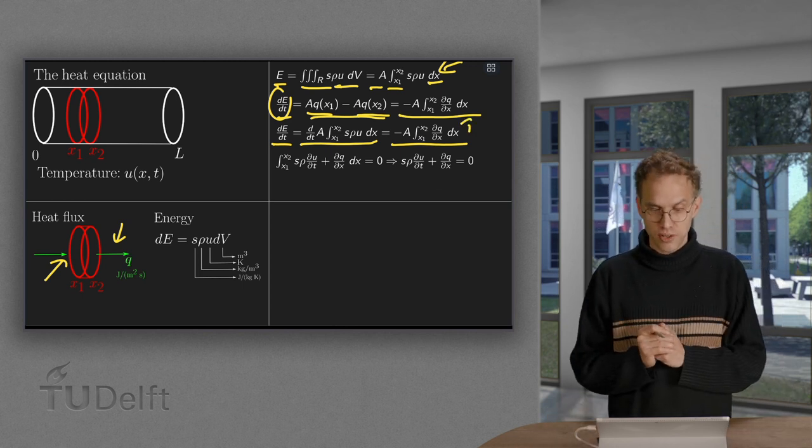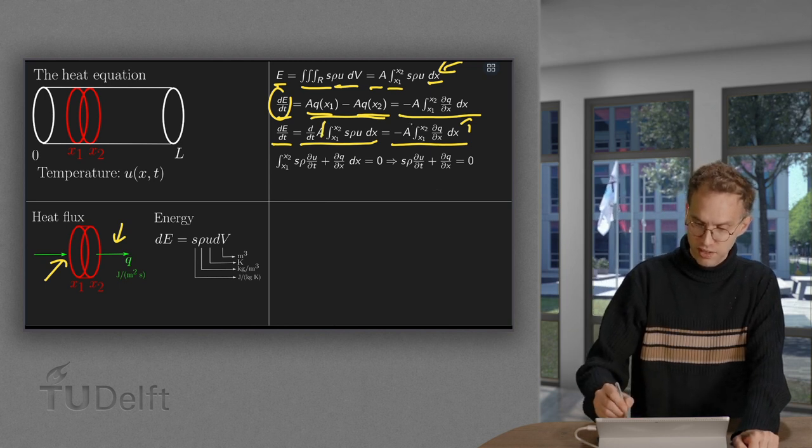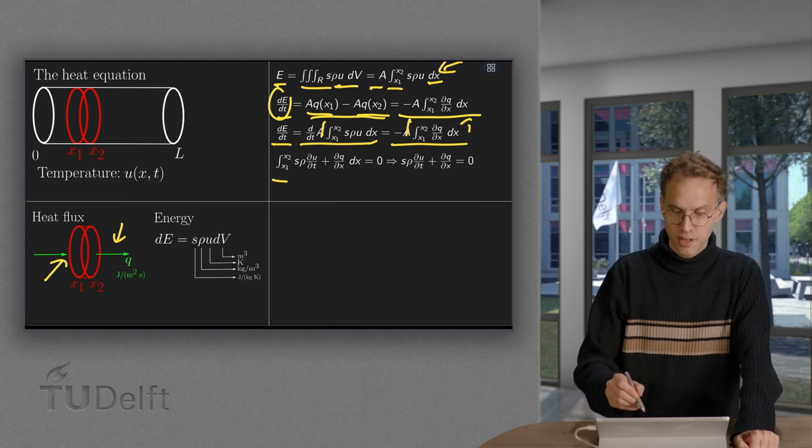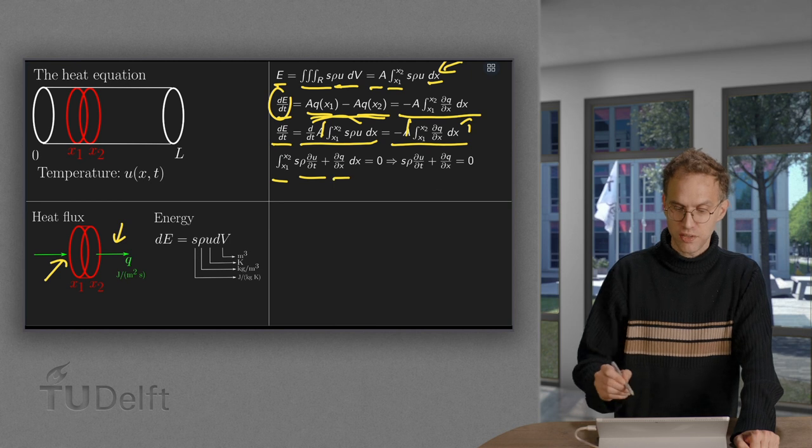Now, then we can turn everything into one integral. Of course, we can just cancel out the factors A. So, we get the integral from X1 to X2, take the d dT in, of S rho dU dT plus dQ dx equals zero.